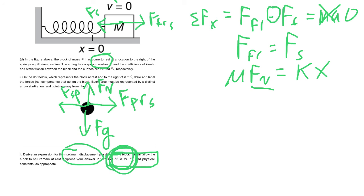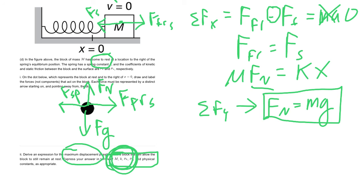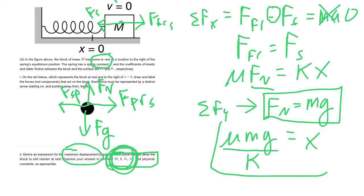We still have the normal force, which is not one of the allowed variables. From the y-direction, the normal force equals mg. Substituting: μmg = kx. Dividing both sides by k gives x = μmg/k. Do a final check to make sure your answer is expressed only in the allowed variables — and in this case we are good to go.